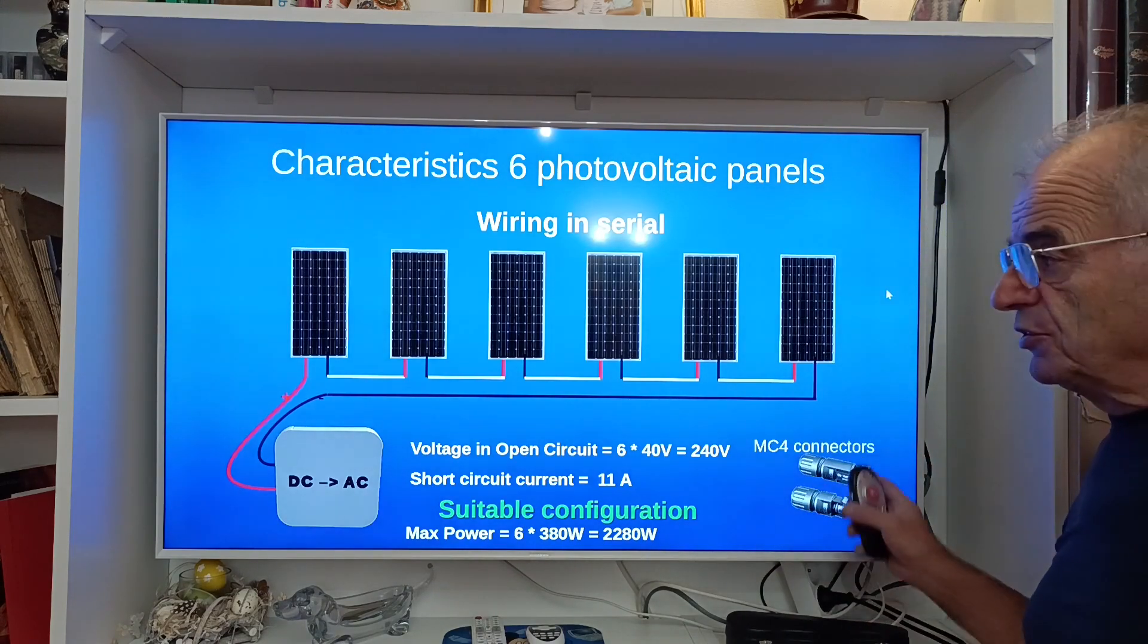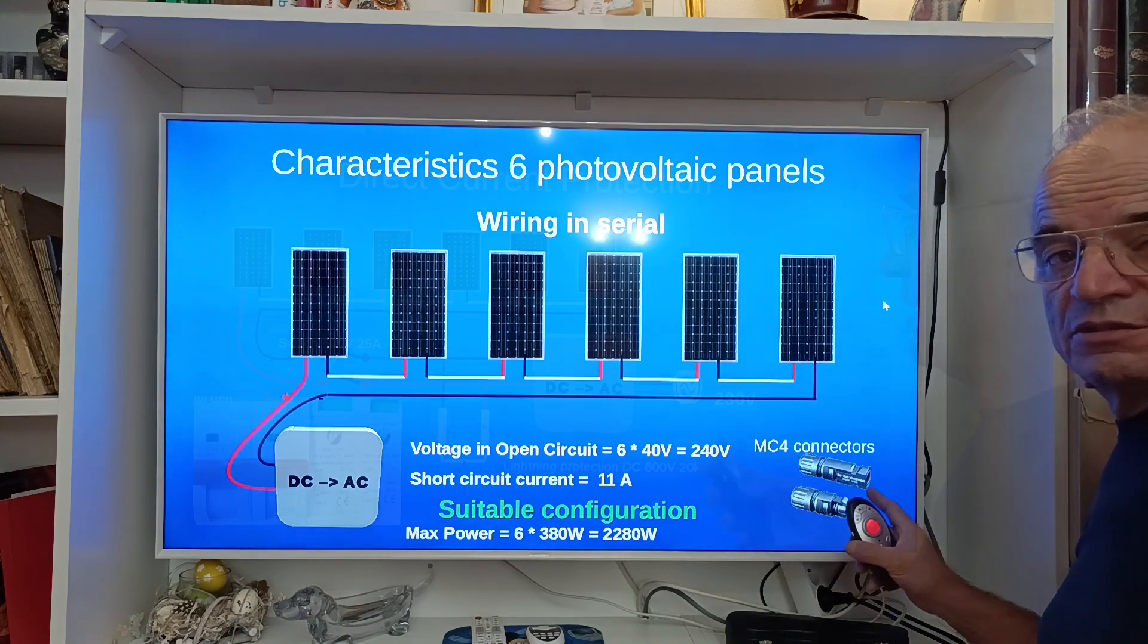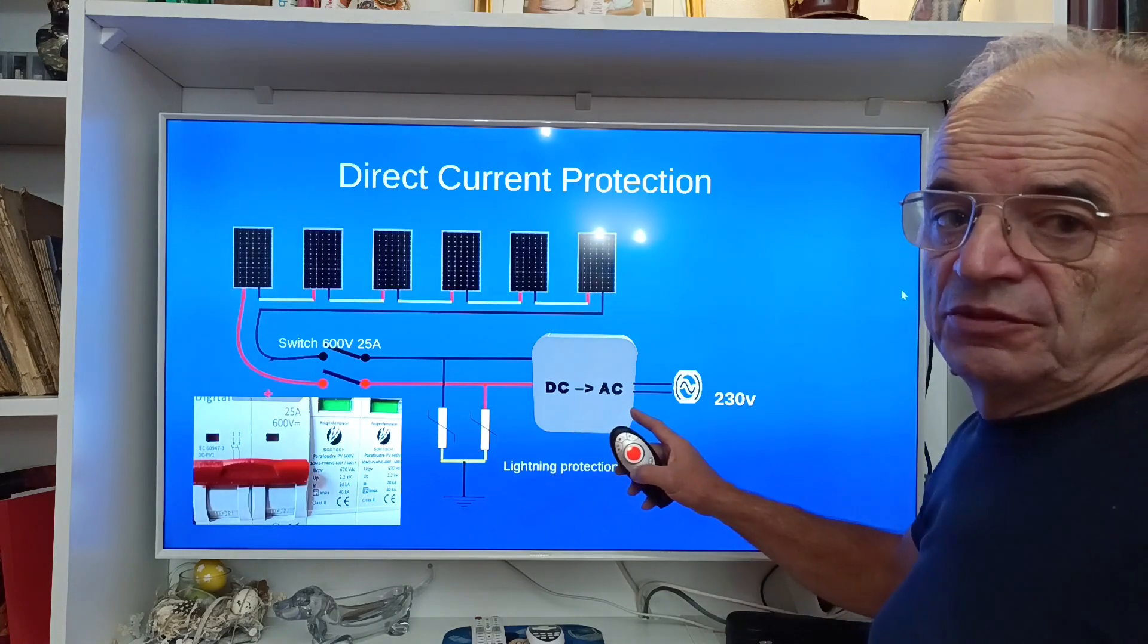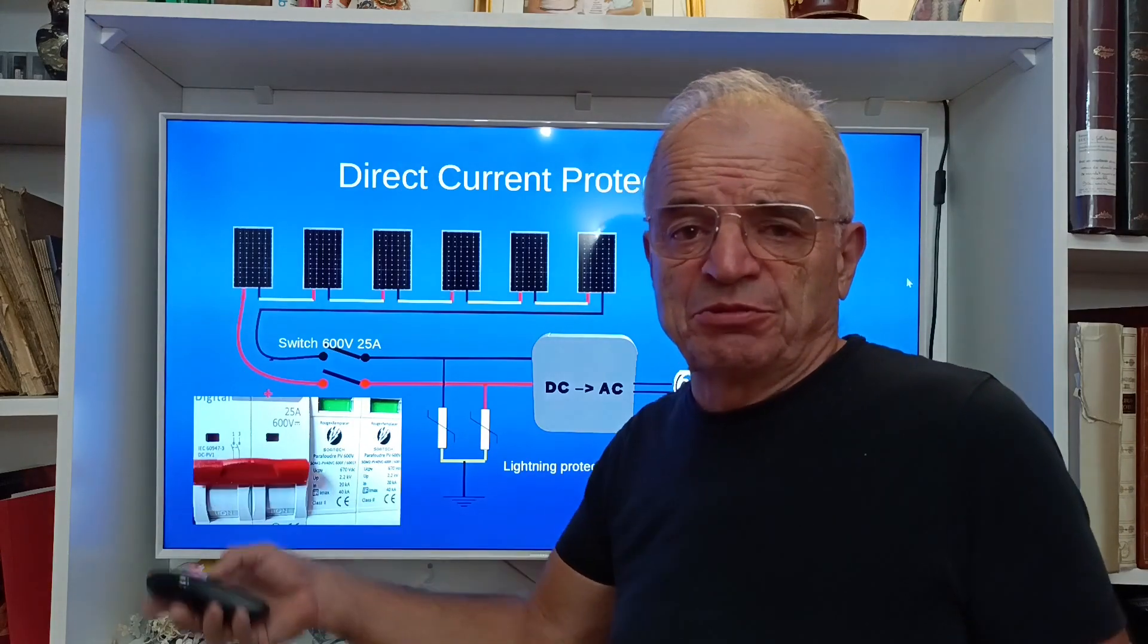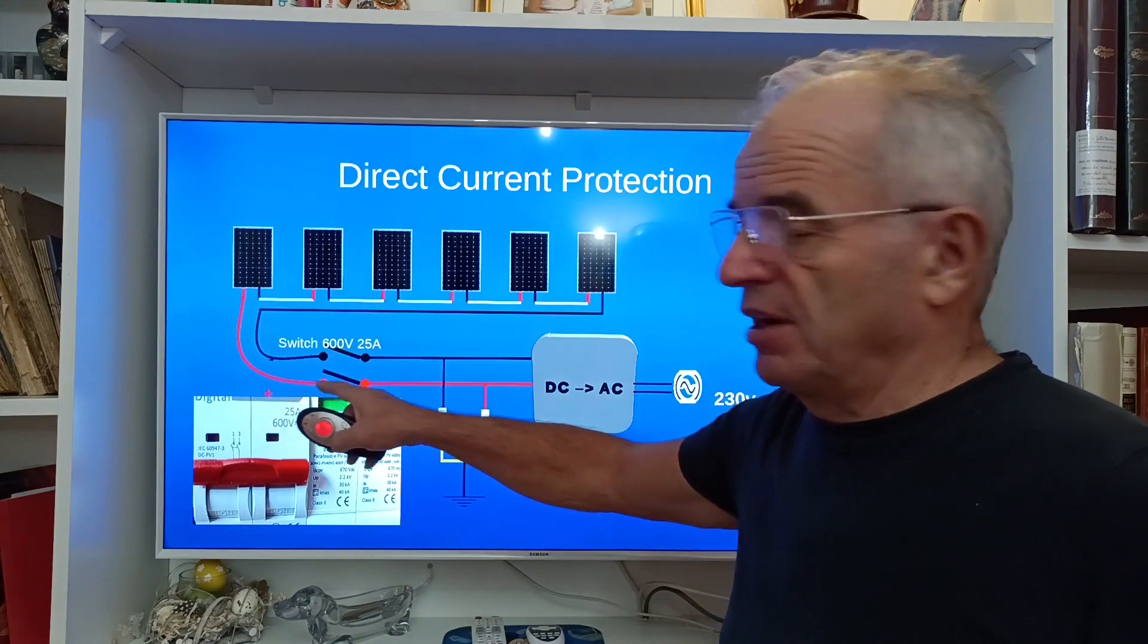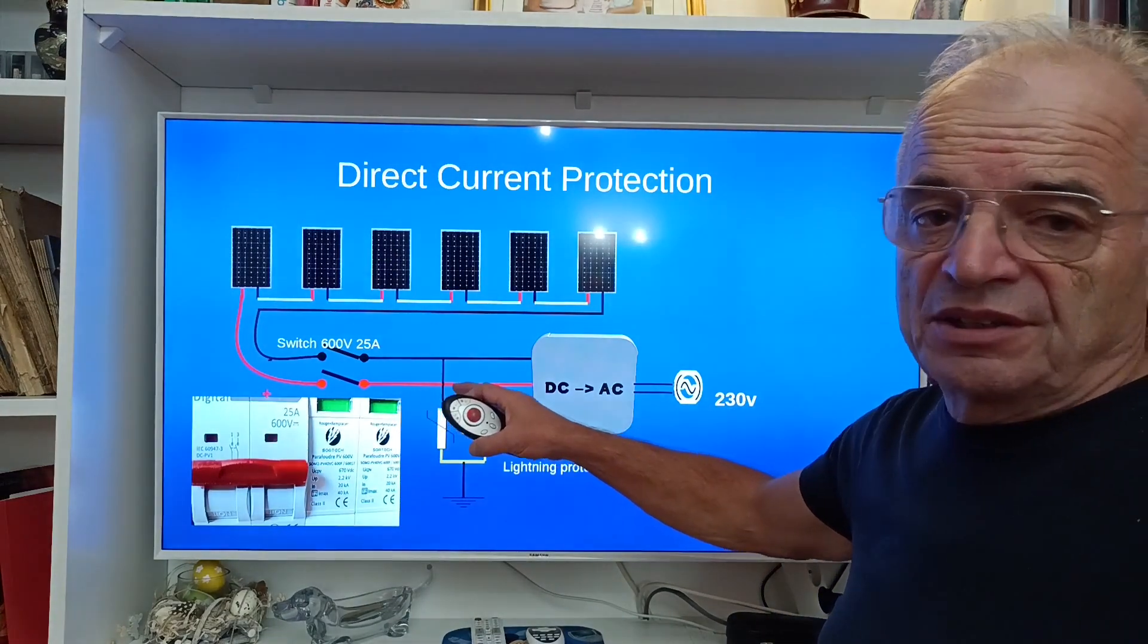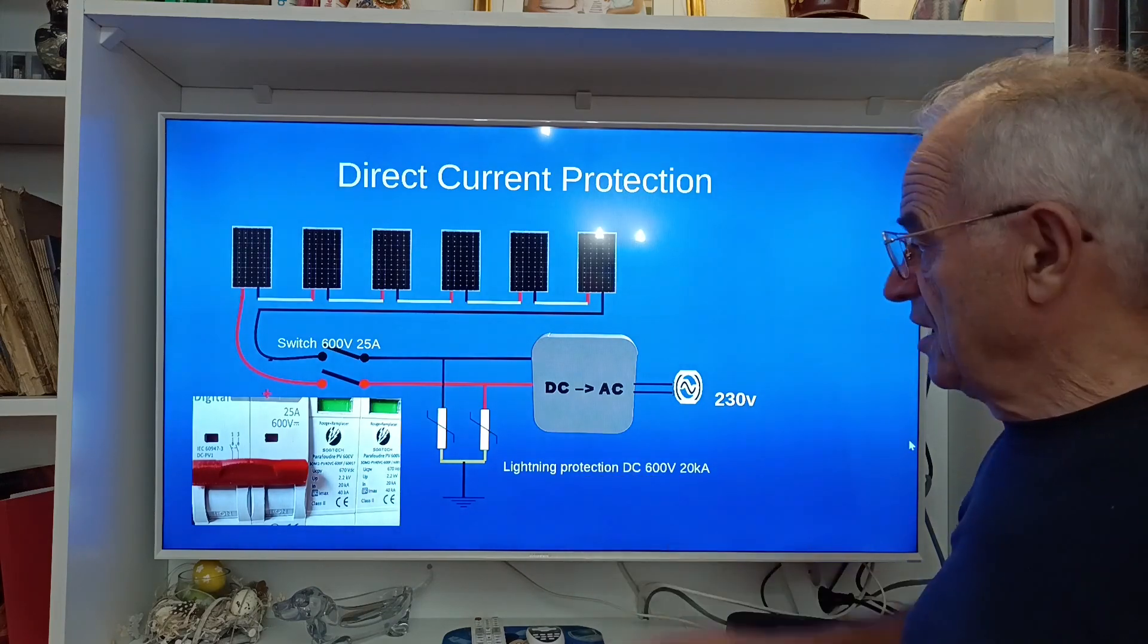Most of the time those panels are connected using what we call MC4 connectors. When we have these six panels before connecting them to the DC to AC converter or the inverter, we need to put a switch. You can understand simply for security reasons, we have to be able to switch off the access to the DC part during the installation. So we have a switch here, but the standard also requires that we put this lightning protection dedicated to DC current.